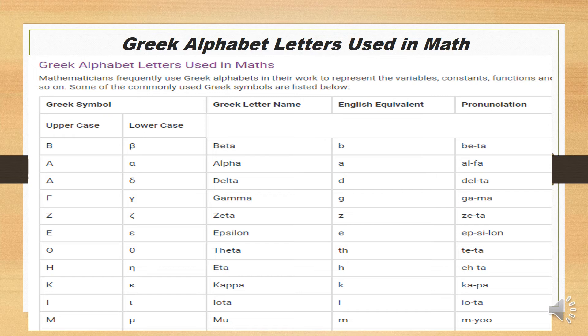Zeta — uppercase and lowercase zeta, equivalent to letter Z, pronunciation: zeta. Epsilon — pronunciation: epsilon. Theta — uppercase and lowercase theta, English equivalent th, pronunciation: theta. Eta — represented by H, English equivalent eta.